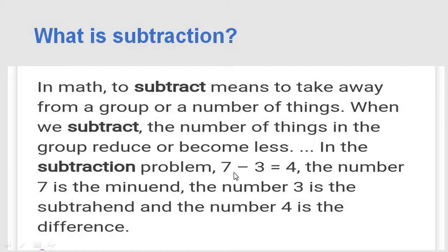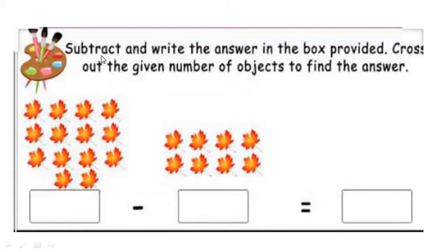In the subtraction problem 7 minus 3 is equal to 4: the number 7 is the minuend, the number 3 is the subtrahend, and the number 4 is the difference. The answer in subtraction is called the difference between the two numbers. Now, subtract and write the answer in the box provided. Cross out the given number of objects to find the answer.